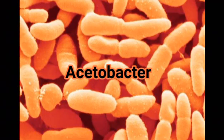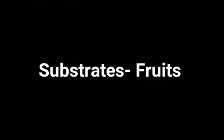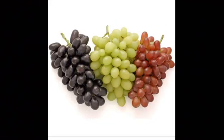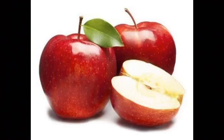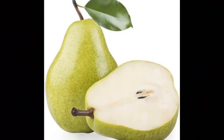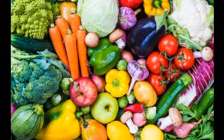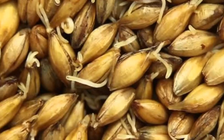Production of Vinegar. There are two steps in the production of vinegar. In the first step, the starchy or sugary material is fermented by Saccharomyces cerevisiae to ethyl alcohol. Then the oxidative transformation of alcohol into acetic acid is carried out by Acetobacter and Gluconobacter. The starting substrates may be fruits like grapes, oranges, apples, pears, etc. Vegetables, malted cereals and sugary syrup are also used.